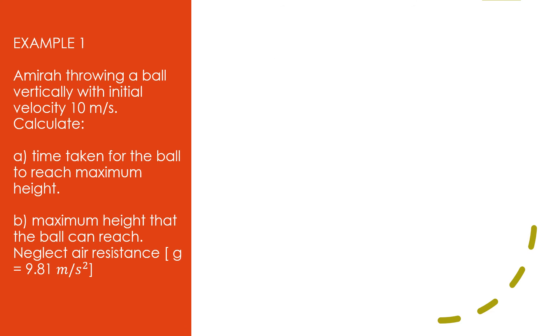Let's do some practice. Example 1: Amira is throwing a ball vertically with initial velocity 10 m/s. Calculate: a) time taken for the ball to reach maximum height. b) the maximum height that the ball can reach. Neglect air resistance, g = 9.81 m/s². To answer this question, you are advised to follow 4 steps.